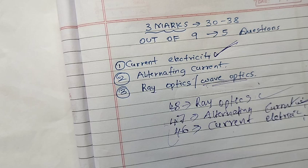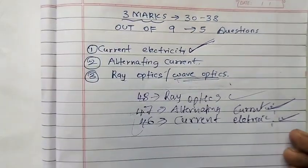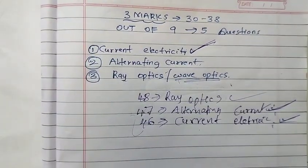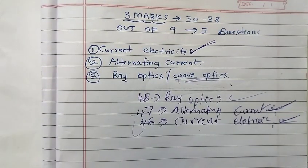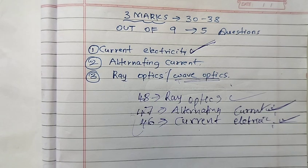Calculate the power — terminal voltage, terminal potential difference. This is question number 46, current electricity. Next, question number 45 is electric charge and fields.